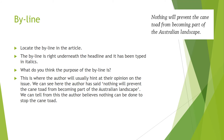The byline is located underneath the headline and it's written in italics. The byline for this article is: "Nothing will prevent the cane toad from becoming part of the Australian landscape." The purpose of the byline is that it provides the reader with the author's opinion — remember we were talking about fact versus opinion a couple of days ago. The byline gives us an understanding of the author's opinion and the way in which the author is trying to lead us through their article.